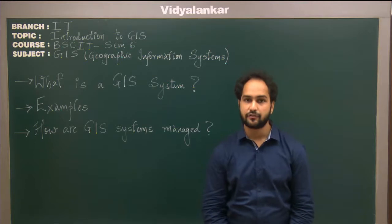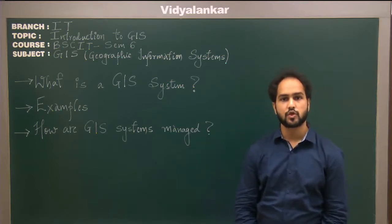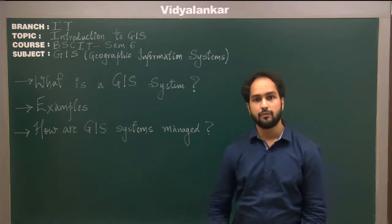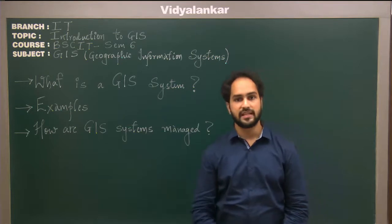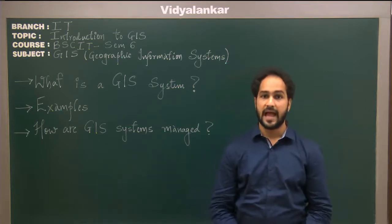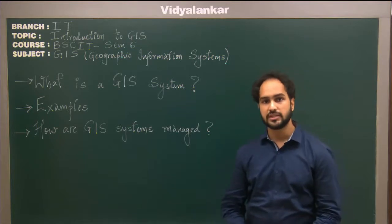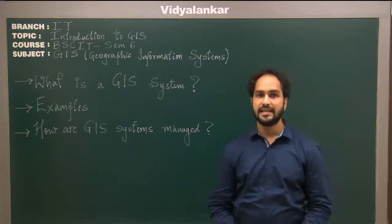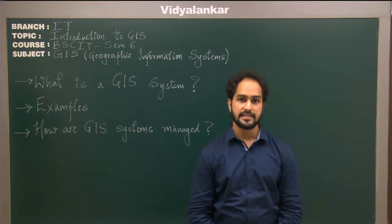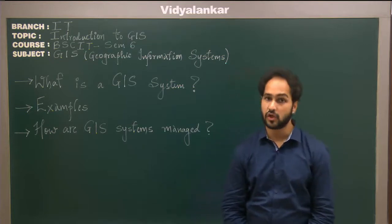GIS stands for Geographic Information Systems. It is a type of computer system which captures data, stores this data, analyzes the data to make certain decisions, and then represents this data in a visual form such as graphs, maps, or charts.